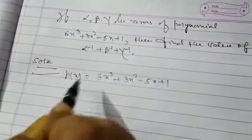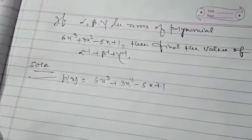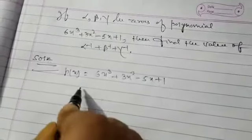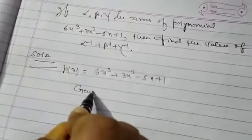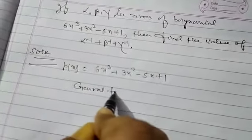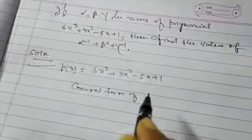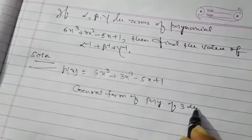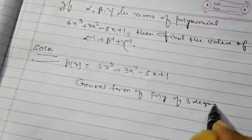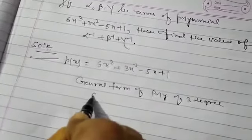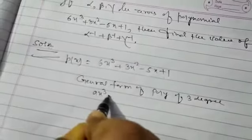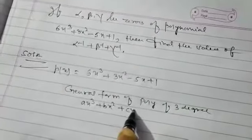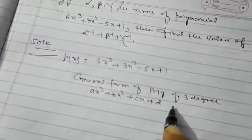Of course, this is a polynomial of three degrees. And you have studied earlier that the general form of polynomial of three degree is a into x cube plus b into x square plus cx plus d.